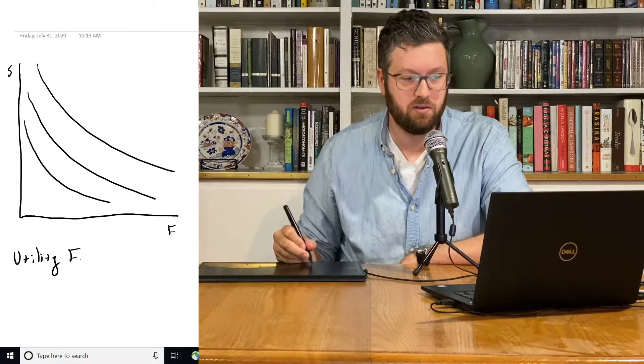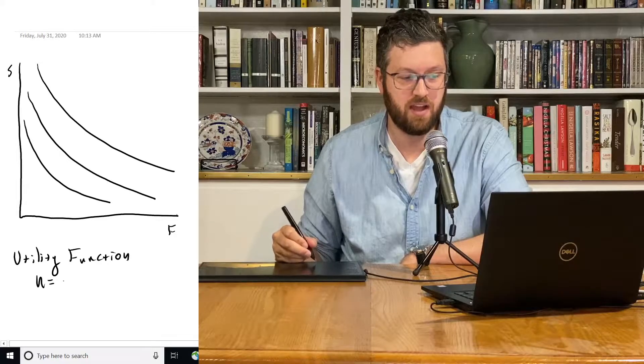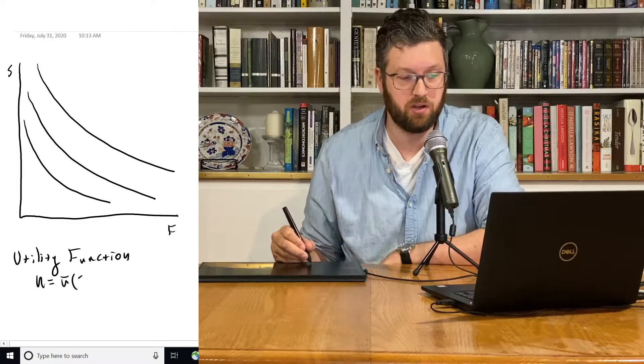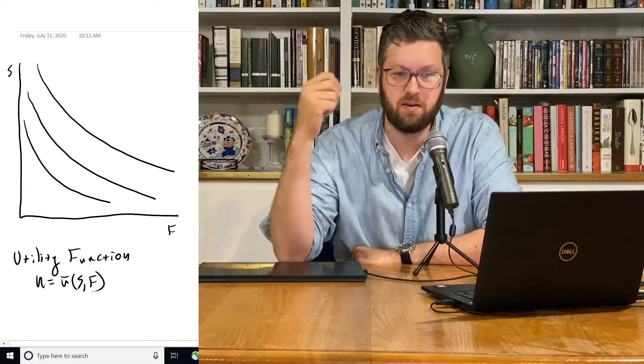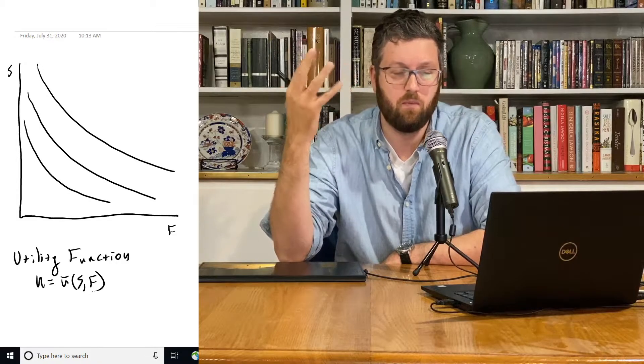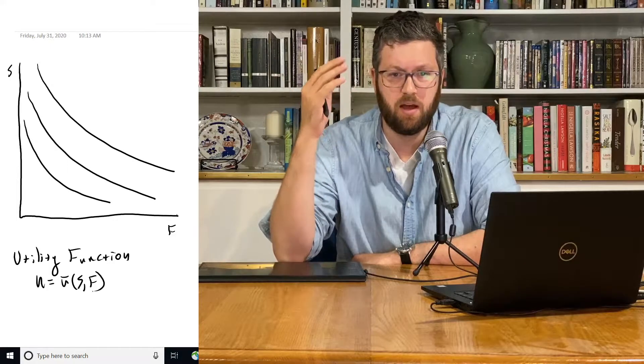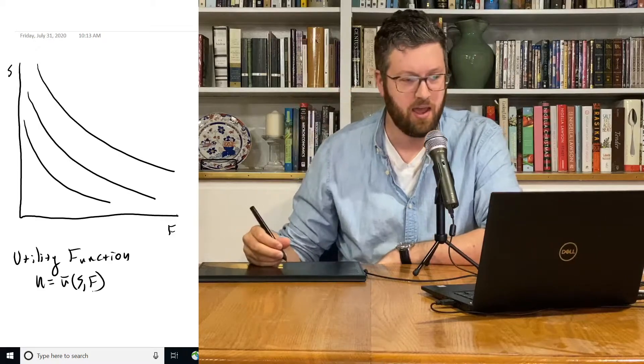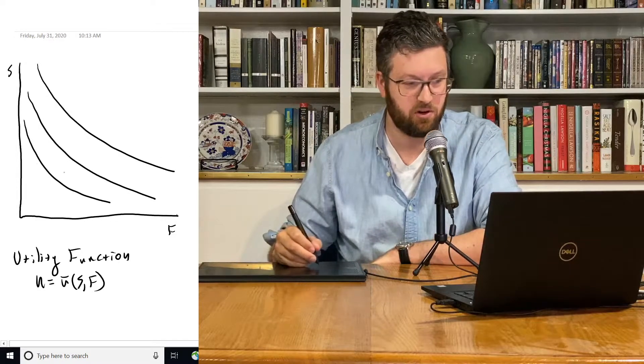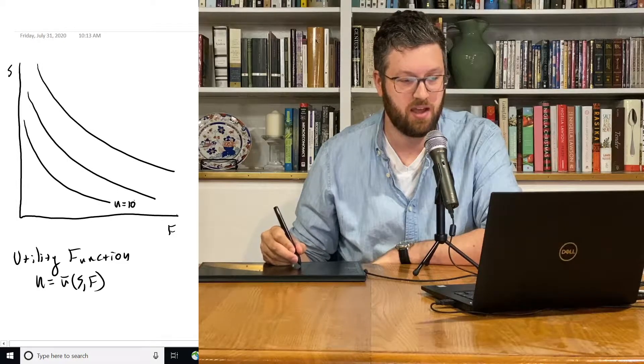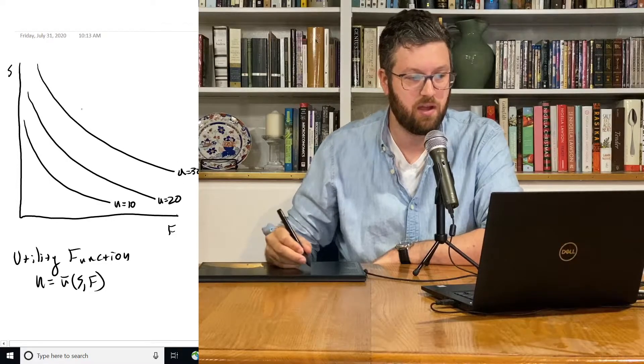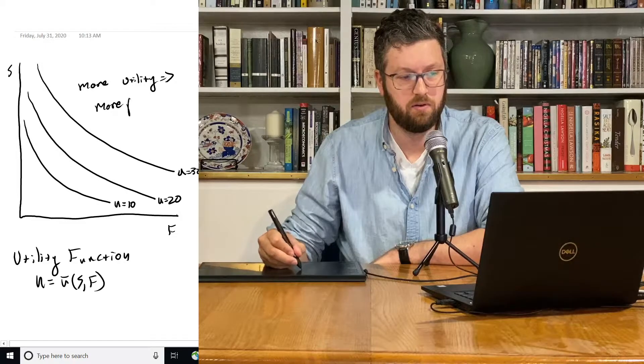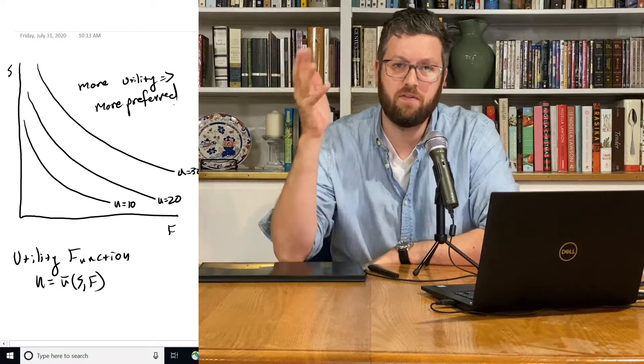So a utility function looks something like this. You've got utility as the output, and then it's a function, U with a bar over it, of the different goods that a consumer can have, like shelter and food or any other things that people desire. You can solve this function. If you set U equal to some fixed number, you can generate these kind of lines. What we do here is basically say each indifference curve is associated with a different utility. So like 10, 20, 30, and we say more utility equals more preferred.